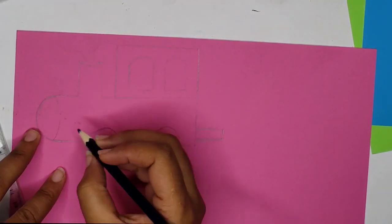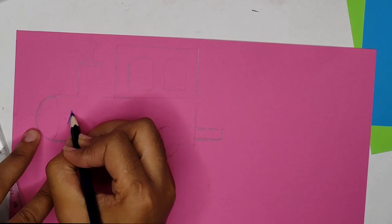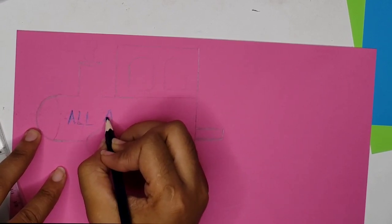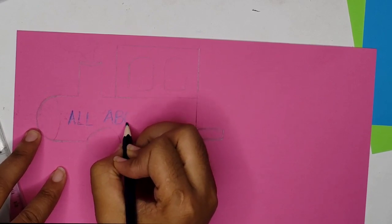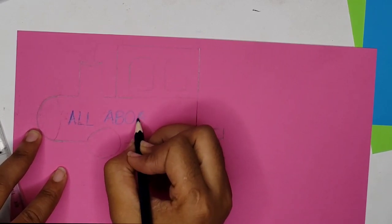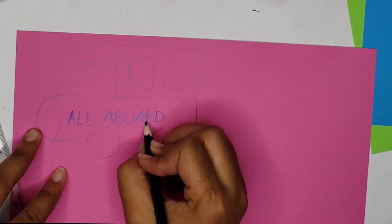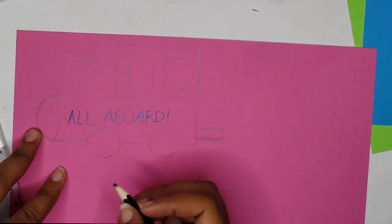You noticed that I added a little rectangle on the end of the train, and that is going to be our connector where we're going to punch a hole and insert the paper clip. The child is going to insert the paper clip to connect the different carriages, to connect the engine and the carriages to each other.